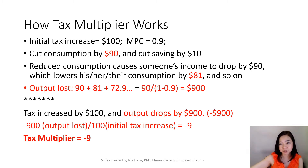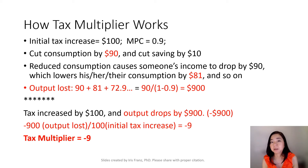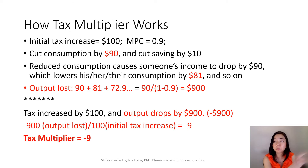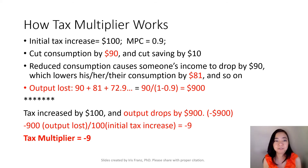That other person will lose income by $90, and as a result, that person is going to cut his or her consumption by $81. Why $81? Because MPC is 0.9 and 90 times 0.9 equals $81. This person's cut in consumption will also cause someone else to lose income by $81, and this process continues. So our output loss will equal 90 plus 81 and so on, eventually summing up to $900.